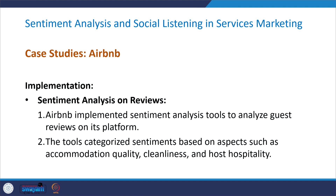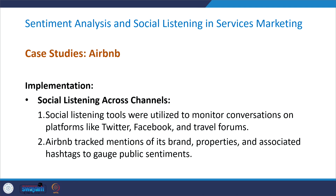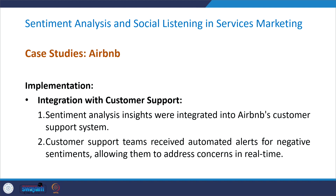How did they implement this? First, they used sentiment analysis on customer reviews — Airbnb implemented sentiment analysis tools to analyze guest reviews, categorizing sentiments based on aspects such as accommodation quality, cleanliness and host hospitality. They also used social listening across channels — monitoring conversations on platforms like Twitter, Facebook and travel forums, tracking mentions of its brand, properties and associated hashtags to measure public sentiments. Sentiment analysis insights were also integrated into Airbnb's customer support system, with automated alerts for negative sentiments allowing teams to address concerns in real time.